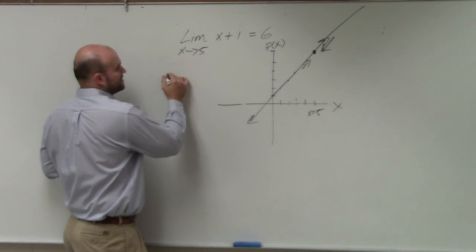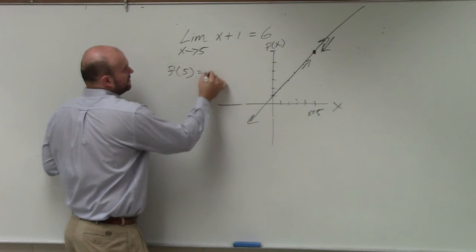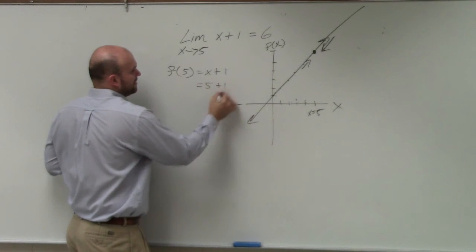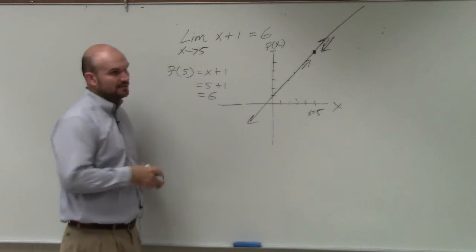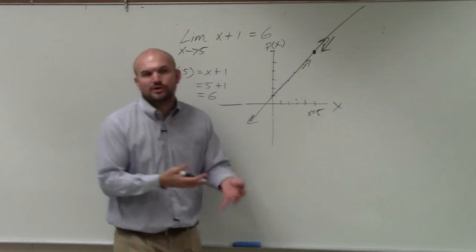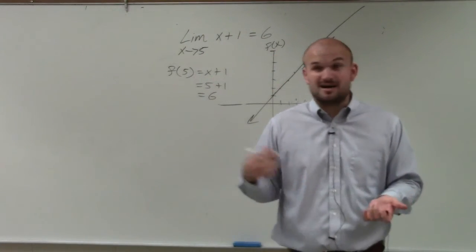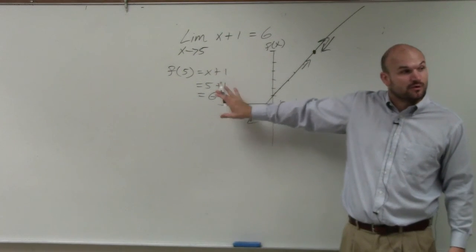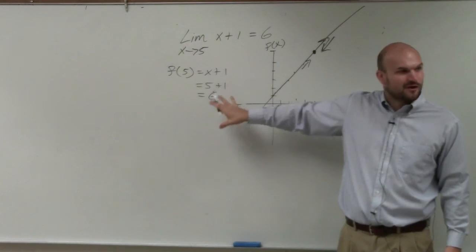So we could have just done f of 5 equals x plus 1, and that equals 5 plus 1, which equals 6, right? However, I am going to bring in a caveat, which I'll go over more notes for you, but you probably want to write it down and put a nice little star to it.